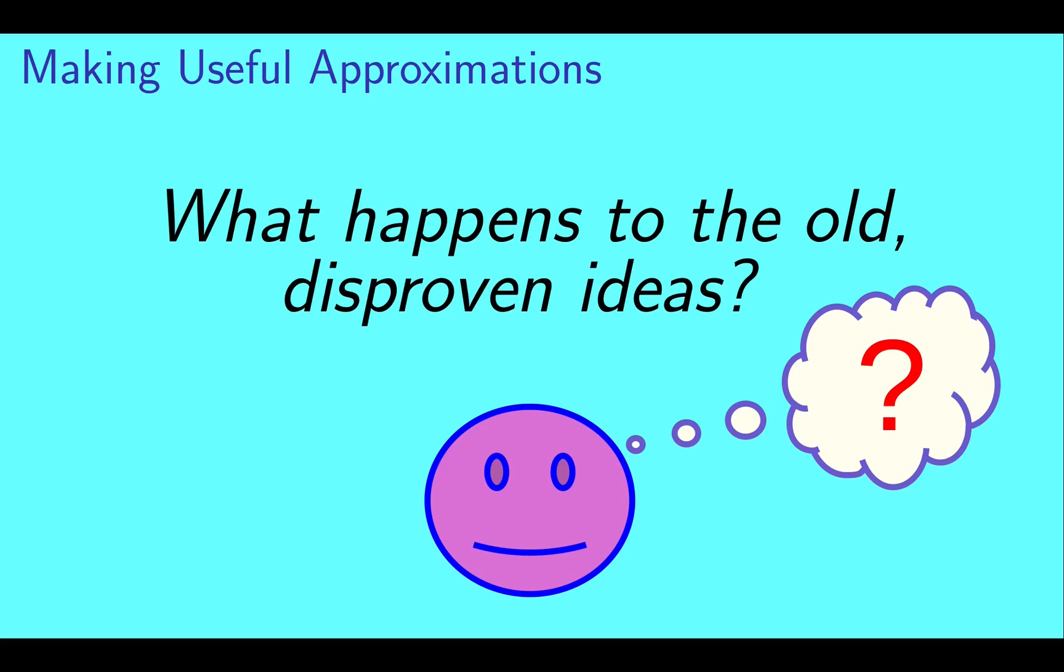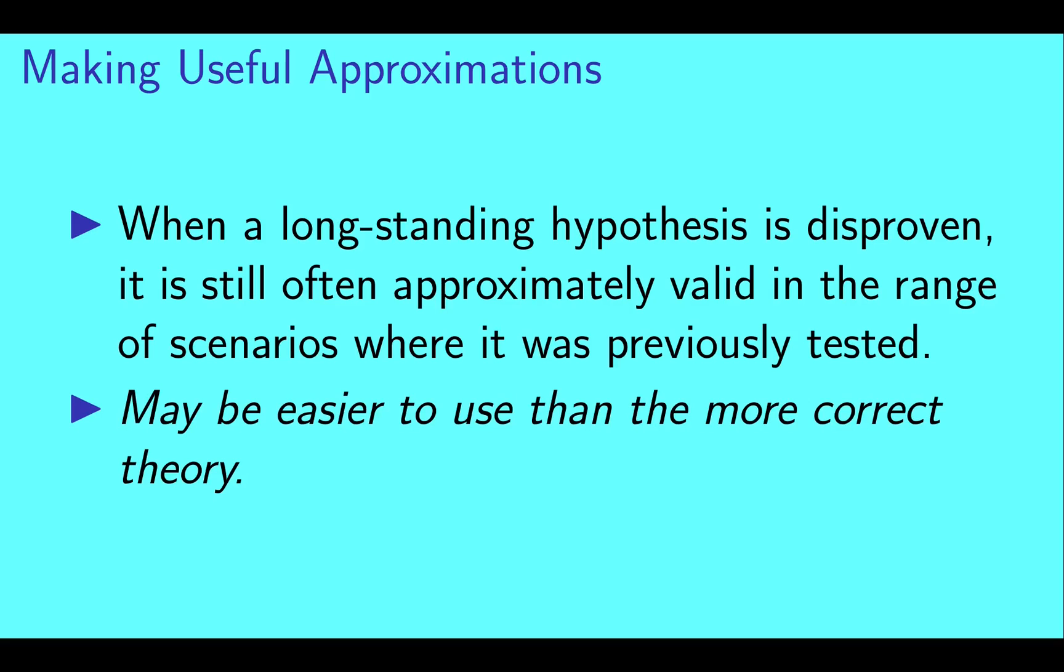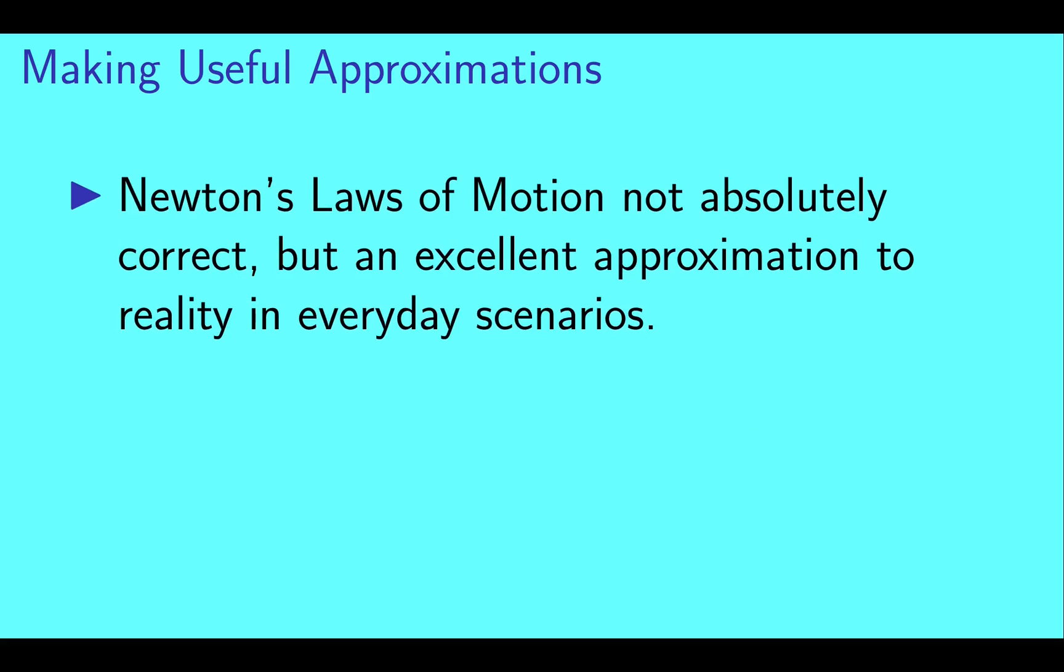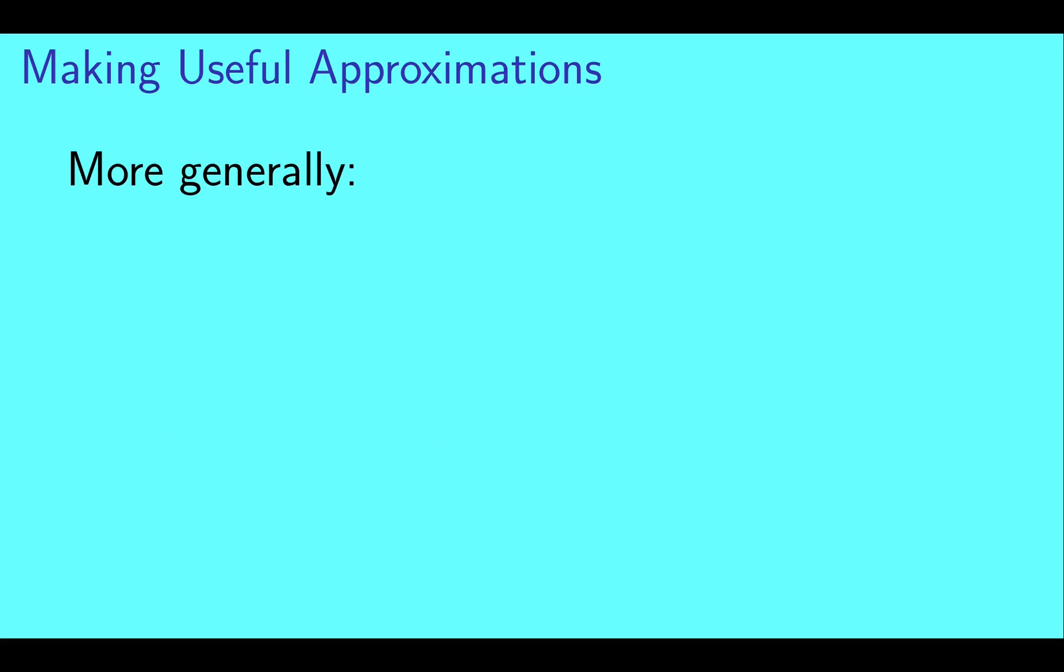If that happens, we need to find a new hypothesis to replace the old one. One question one could then ask is: what happens to the old disproven ideas? When a long-standing hypothesis is disproven, it is still often approximately valid in the range of scenarios where it was previously tested, and also it may be easier to use than the more correct theory that replaced it. While Newton's laws of motion are not absolutely correct, they are an excellent approximation to reality in everyday scenarios, so we still use them even though they're wrong.